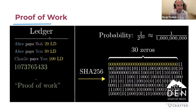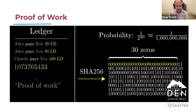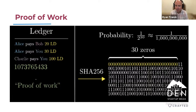It's also deterministic: for every given input, as long as that input is the same, the SHA-256 algorithm is going to output the same result. Here's an example of a hypothetical block: you have a ledger where Alice pays Bob 20, Alice pays me 30, etc. The number 1073765433 is called the nonce. This whole process is called proof of work. What Bitcoin miners are doing is trying to come up with a specific input on the left that creates an output with N number of leading zeros.